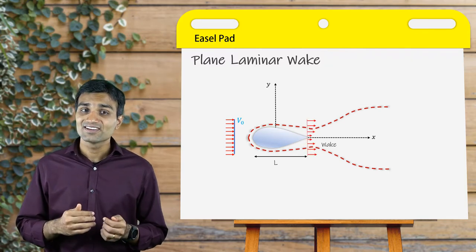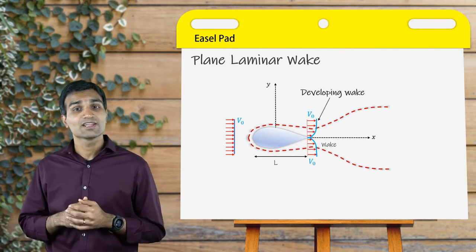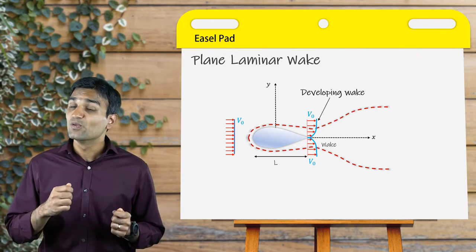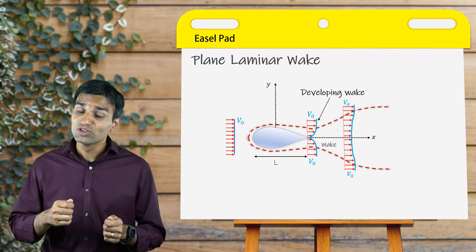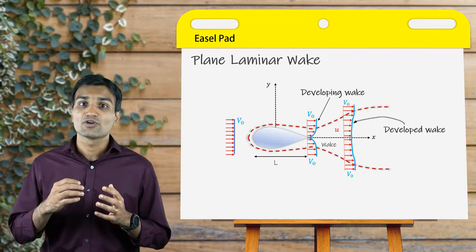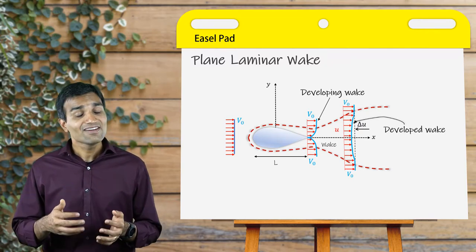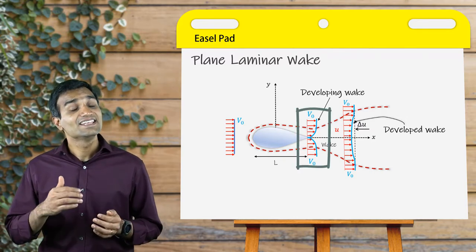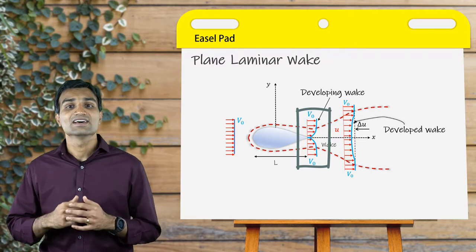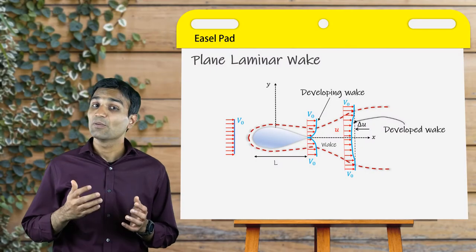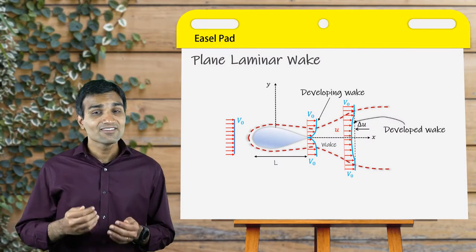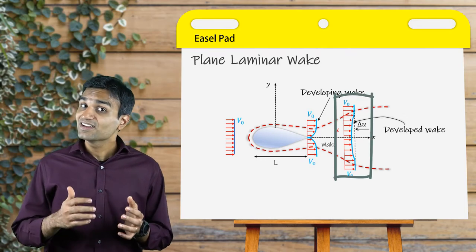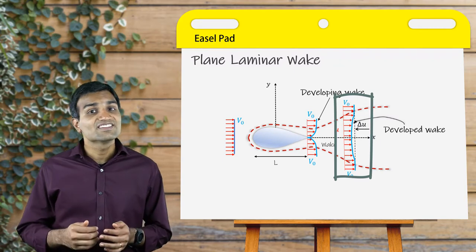If we consider a thin airfoil parallel to the free stream, the generated wake is smooth whose velocity defect decays uniformly with distance from the airfoil. The trailing wake immediately downstream of the airfoil is still developing and non-similar. However, it becomes developed further downstream of the solid object, and in this region we consider the velocity profiles to be self-similar.